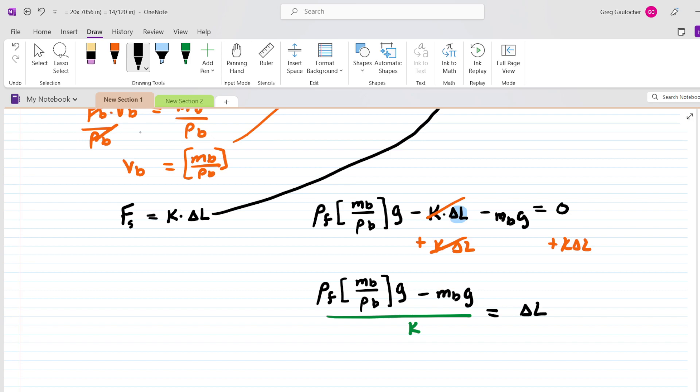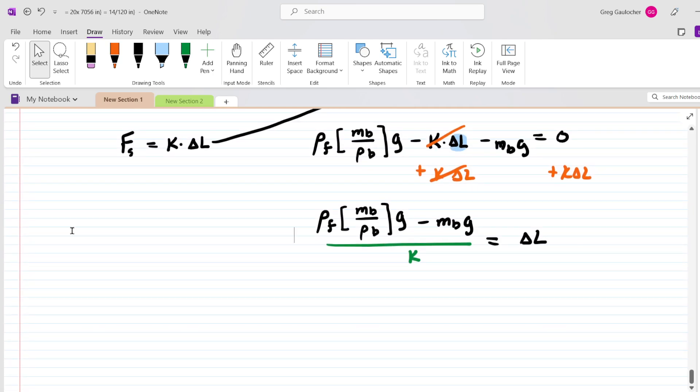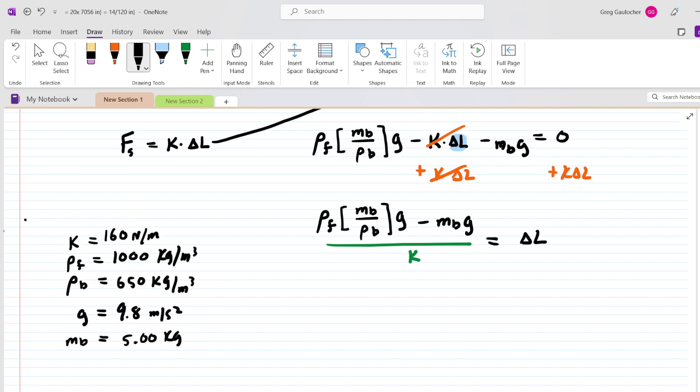And so here is the final expression into which we can plug the given data to solve for the elongation delta L. The given information is as follows. This is taken right out of the question. The only thing that was not directly given was the density of the fluid. Now, this block was submerged in water, and the density of water is 1,000 kilograms per meter cubed. So we're going to take all of these data and we're going to plug into our expression to calculate the elongation.